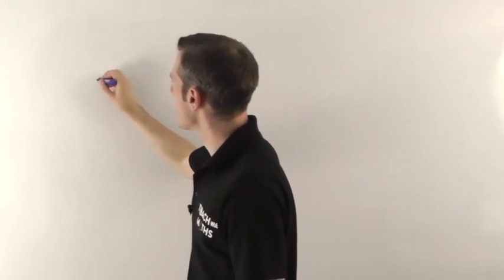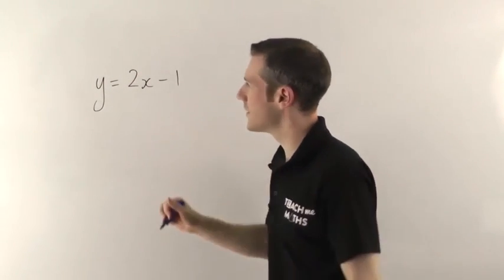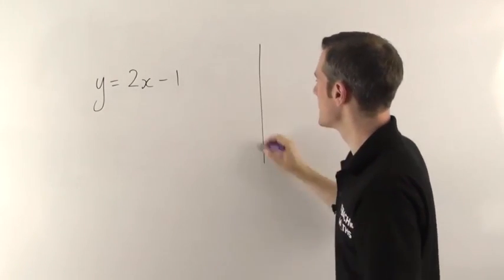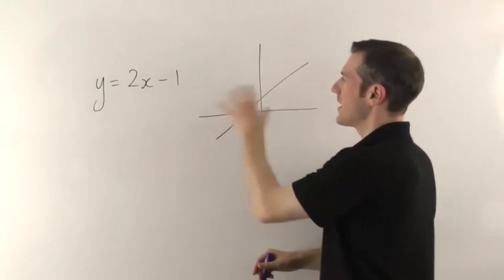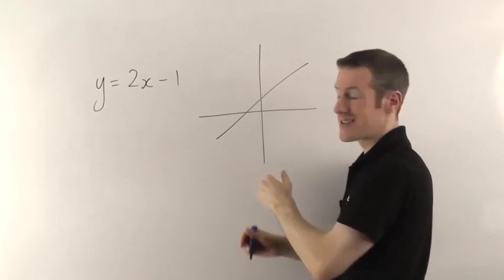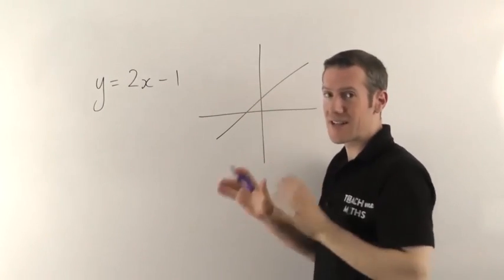For example, if I give you the equation y equals 2x minus 1, there is a graphical version of this. This turns out to be a straight line, and these two things—the equation and the line in this case—are the same thing. They're just two different ways of writing exactly the same thing.